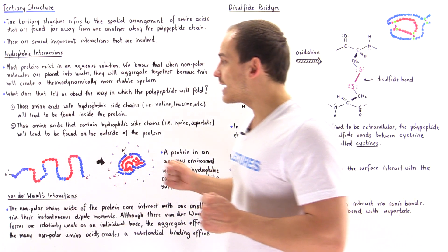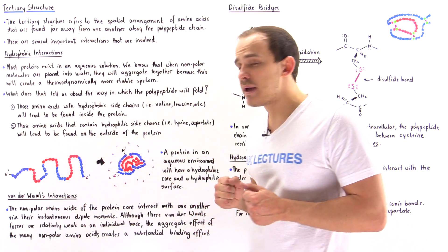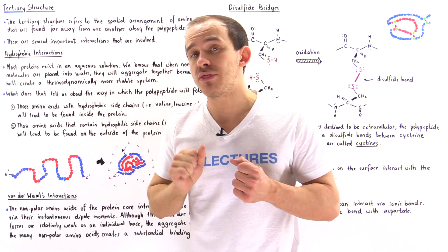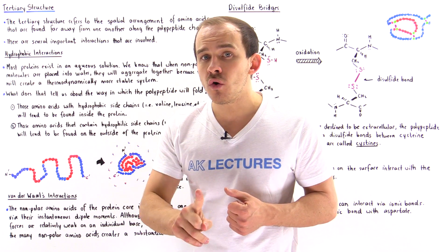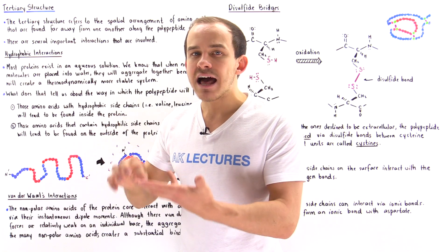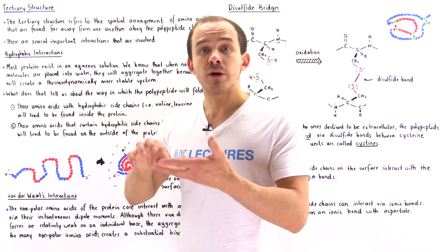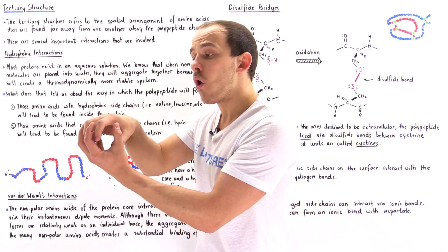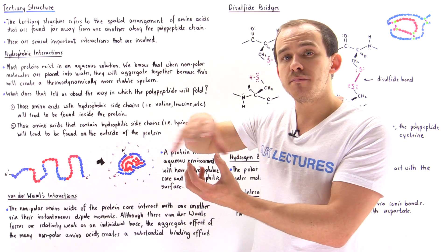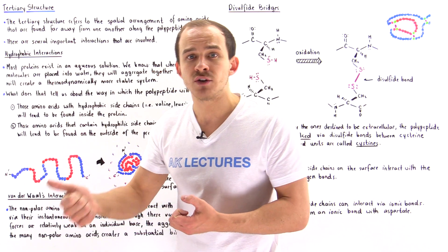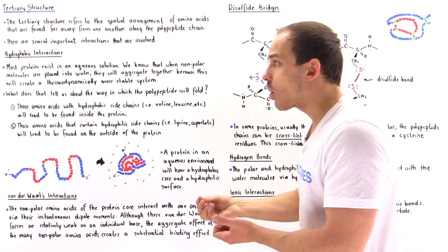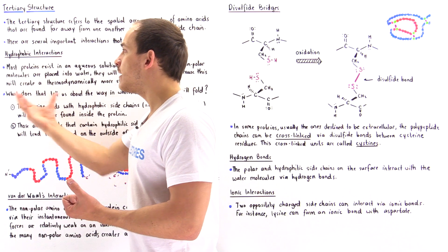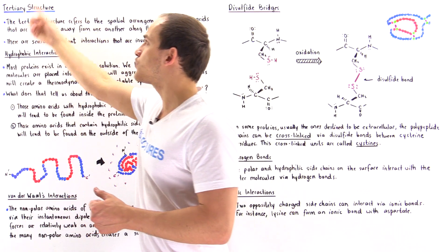If we take our polypeptide and place it into an aqueous solution, the hydrophobic effect and hydrophobic interactions will take effect. All those amino acids that contain non-polar hydrophobic groups — for example, valine, alanine, leucine, isoleucine, methionine, tryptophan, phenylalanine, and so forth — will end up aggregating together in the core at the center of that protein. While all those amino acids that contain polar sidechains — for example, lysine, arginine, aspartate, and so forth — will be found on the surface of that protein.